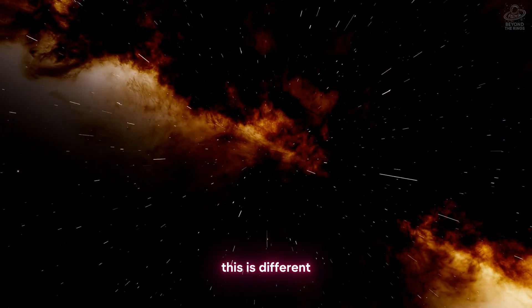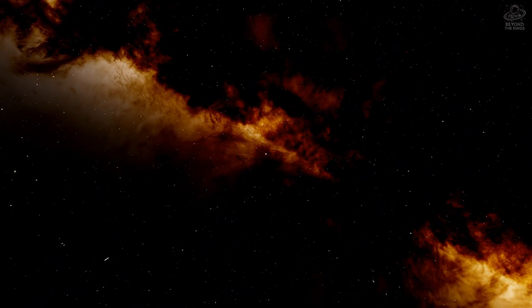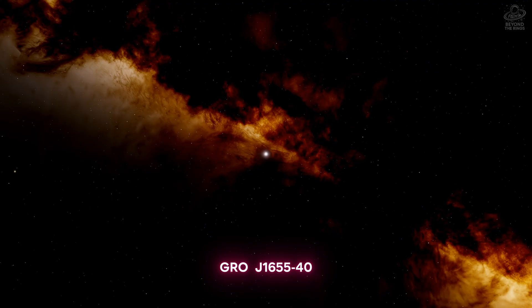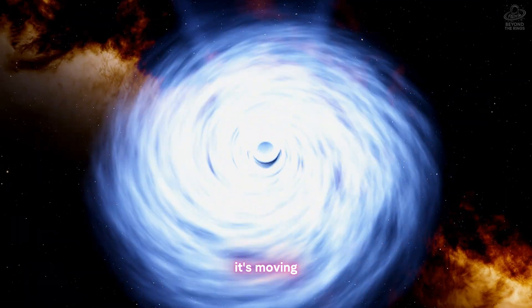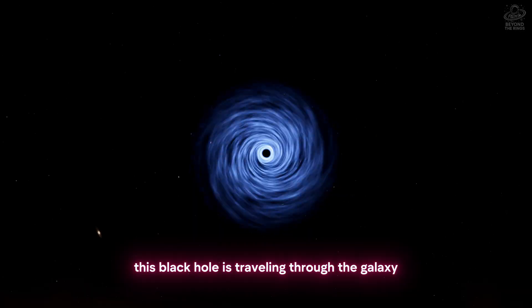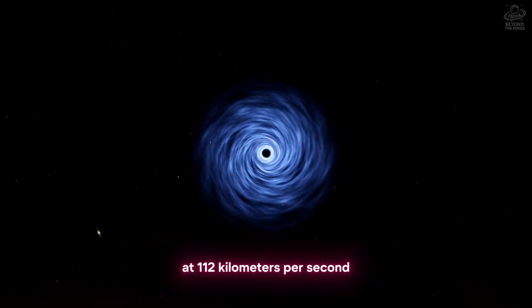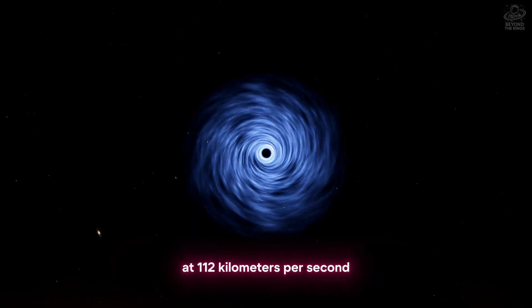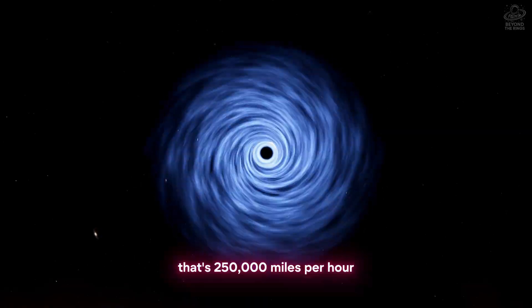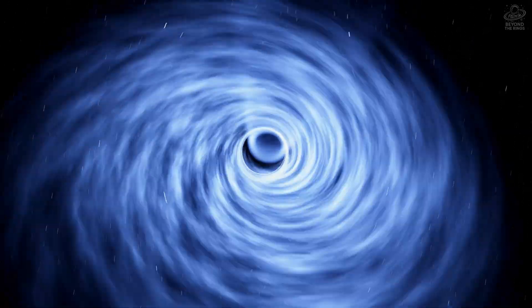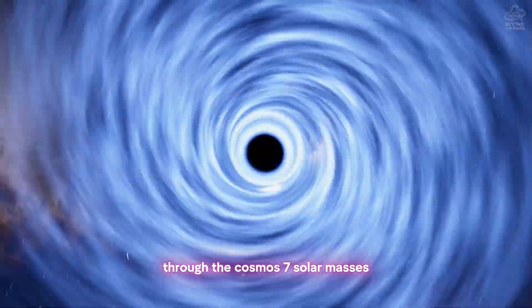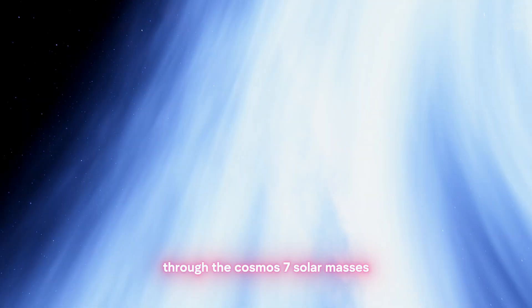Well, this is different. GRO J1655-40 isn't just sitting in space. It's moving. This black hole is traveling through the galaxy at 112 kilometers per second. That's 250,000 miles per hour. Someone fired this thing like a bullet through the cosmos. Seven solar masses. But here's what makes it legendary.